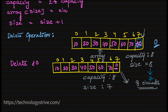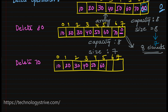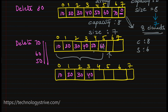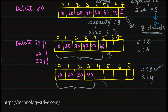Now let's perform some more delete operations. I am going to delete 70. After deleting 70, the capacity is still 8 and the size is 6 — only 6 elements are currently present in the array. After deleting 80, 70, 60, and 50, the capacity is still 8 and size has changed to 4 — only 4 elements are present. If you notice, we still have memory occupied but we are not using it, so this is a waste of space — half of the space is currently wasted.